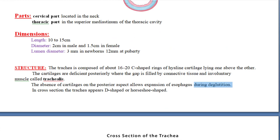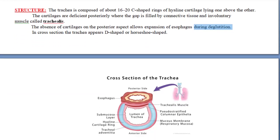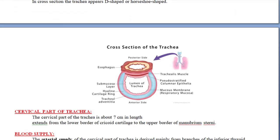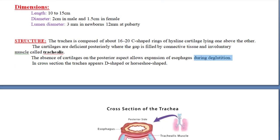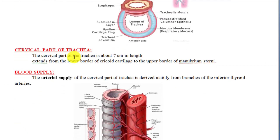This allows the esophagus to open properly for the passage of food substances. In cross-section, the trachea appears D-shaped or horseshoe-shaped — not a complete C, but rather a D-shape.